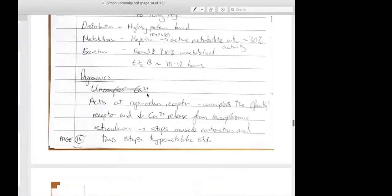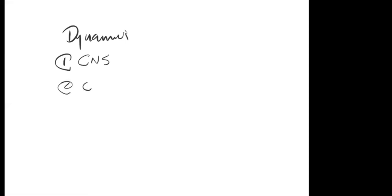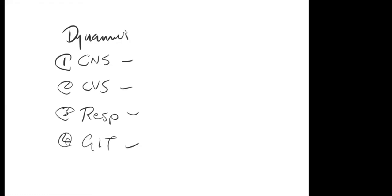This is an excellent answer — the only thing to expand on is the pharmacodynamics. If you struggle, think about it in broad categories. When you talk about pharmacodynamics, make sure you cover the three or four main core areas: CNS, CVS, respiratory, and you can add GIT as well. Does dantrolene have any CNS effects?